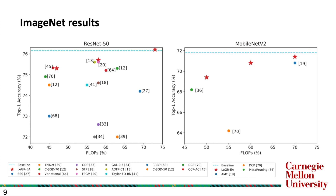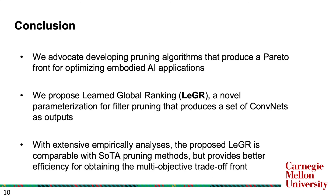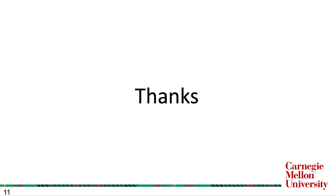On ImageNet, Ledger-AEA, marked with a red star, performs comparably with state-of-the-art filter pruning methods while only learning the ranking once. In conclusion: first, we advocate developing filter pruning algorithms that produce a Pareto front for optimizing embodied AI applications. Second, we propose Learned Global Ranking, a novel parameterization for filter pruning that produces a set of compact networks as outputs. Third, with extensive empirical analysis, the proposed Ledger is comparable with state-of-the-art filter pruning methods but provides better efficiency for obtaining the multi-objective trade-off front. Thank you for listening.